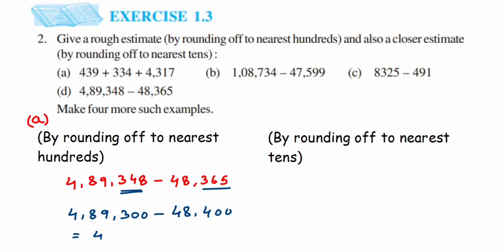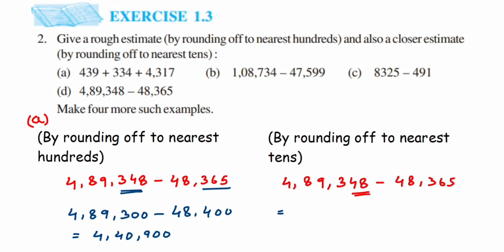Now rounding to nearest tens: 4,89,348 minus 48,365. For 48, it lies between 40 and 50 but is closer to 50, so 4,89,348 becomes 4,89,350. For 65, it is right at the center between 60 and 70, so it rounds up to 70, making 48,365 become 48,370. Subtracting: 4,89,350 − 48,370 = 4,40,980.